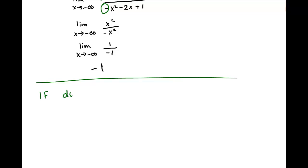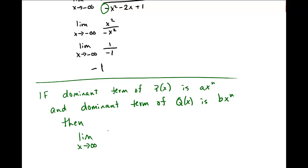And let's write it down maybe like this. So if the dominant term of p(x) is, let's say, a x to the n, and the dominant term of q(x) is b x to the n. And remember the degrees are the same here, right? The degree of the numerator is the same as the degree of the denominator. Then the limit as x goes to infinity or minus infinity of p(x) over q(x) is equal to a over b. Then you get a relationship between those coefficients and the actual limit. And we just saw that example.